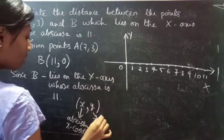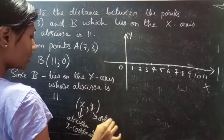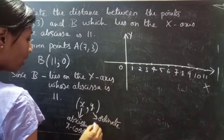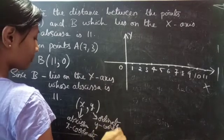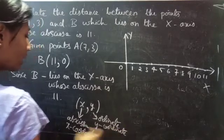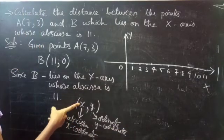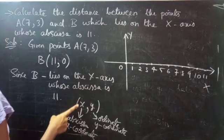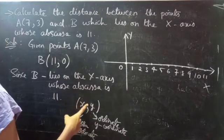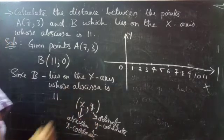And the second number is called ordinate, which is the number for y-coordinate. So the first coordinate is from x and second coordinate is from y. We call the first coordinate as abscissa and second coordinate as ordinate.